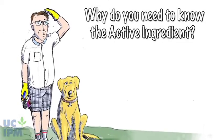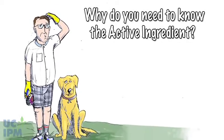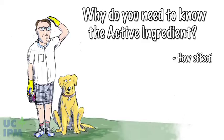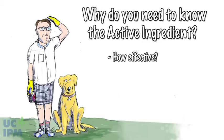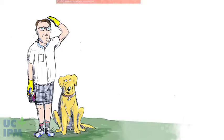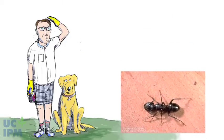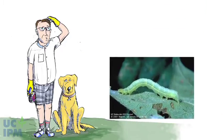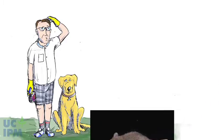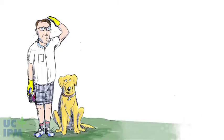Why do you need to know the active ingredient? Knowing the active ingredient will allow you to research information on how effective the product is at controlling your pest before you buy it. Don't rely on a trade name or pictures on a label to determine if the pesticide will solve your pest problem.